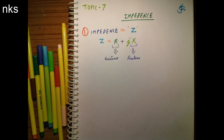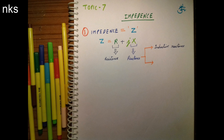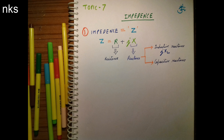Reactance is of two types: inductive reactance and capacitive reactance. Inductive reactance is denoted by Jxl and capacitive reactance is denoted by minus Jxc. Please remember: inductive reactance is positive, capacitive reactance is taken as negative.